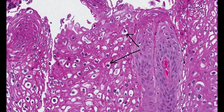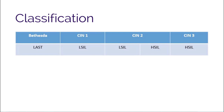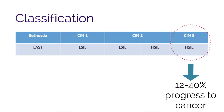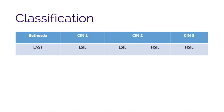Looking at the classification systems, Bethesda classification of CIN1 is equivalent to the LAST system's LSIL. CIN3 is equivalent to HSIL; for these lesions, 12 to 40% progress to cancer, typically taking 8 to 13 years after diagnosis of a high-grade lesion. For CIN2, there has been lack of reproducibility, so P16 staining was added in the LAST system. If P16 negative, histology is consistent with LSIL; if P16 positive, this is consistent with HSIL. For CIN2, 22% progress to CIN3 and 5% progress to cancer.